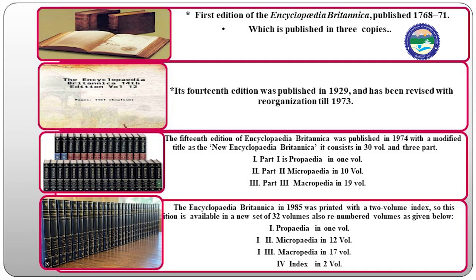Also, the Encyclopaedia Britannica in 1985 had a revised structure with additional volumes. The New Encyclopaedia Britannica was published in 32 volumes and four parts. The Encyclopaedia Britannica was published in 1895 and it was published in 32 volumes and four parts.